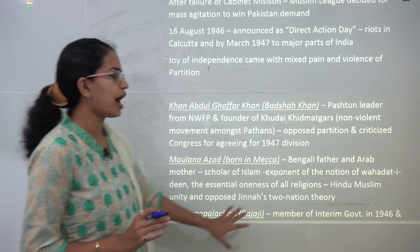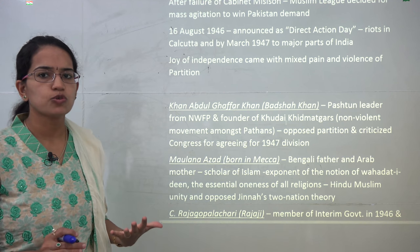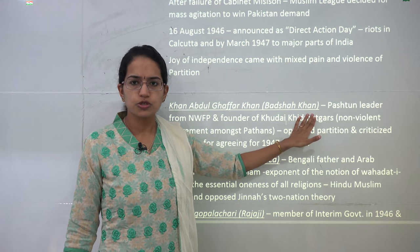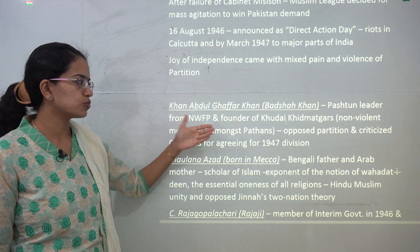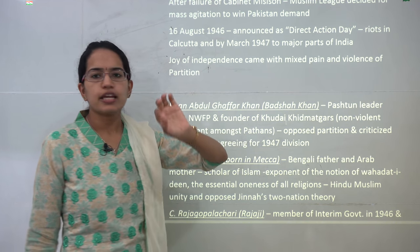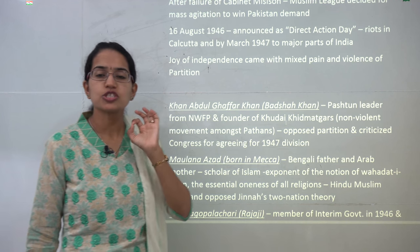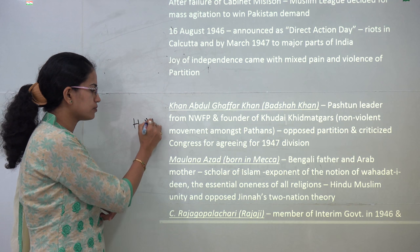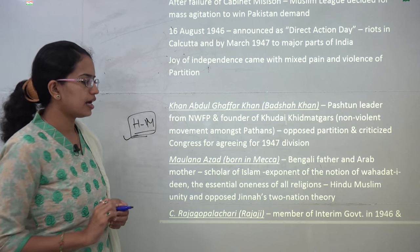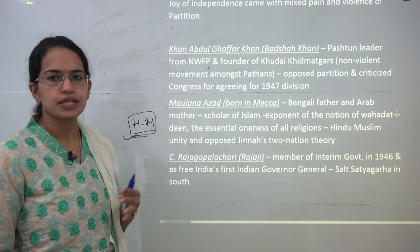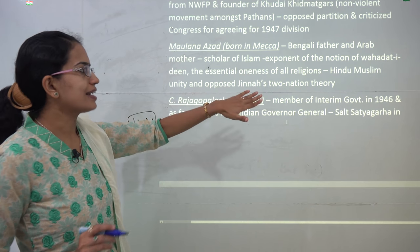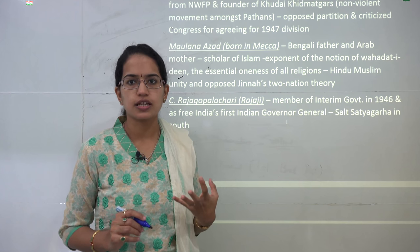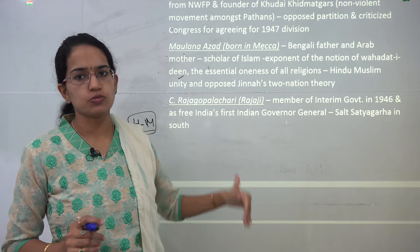Some leaders had immensely important roles in the independence movement. Khan Abdul Ghaffar Khan, also known as Badshah Khan, was a Pathan/Pashtun leader and founder of the Khudai Khidmatgars. He strongly opposed a separate state of Pakistan and wanted Hindu-Muslim unity. Maulana Azad was born in Makkah — his father was Bengali and his mother Arab. He was a scholar of Islam and exponent of Wahdat-ud-Din, meaning oneness of all religions. Being a Muslim, he was a proponent of Hindu-Muslim unity. Congress had a huge support from Muslim leaders, and during partition, Muslims who wanted to remain in India were allowed to do so.